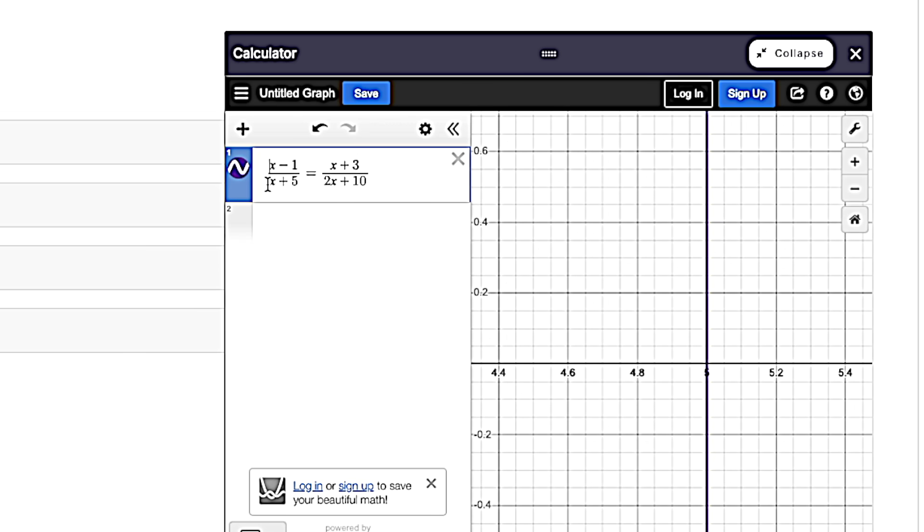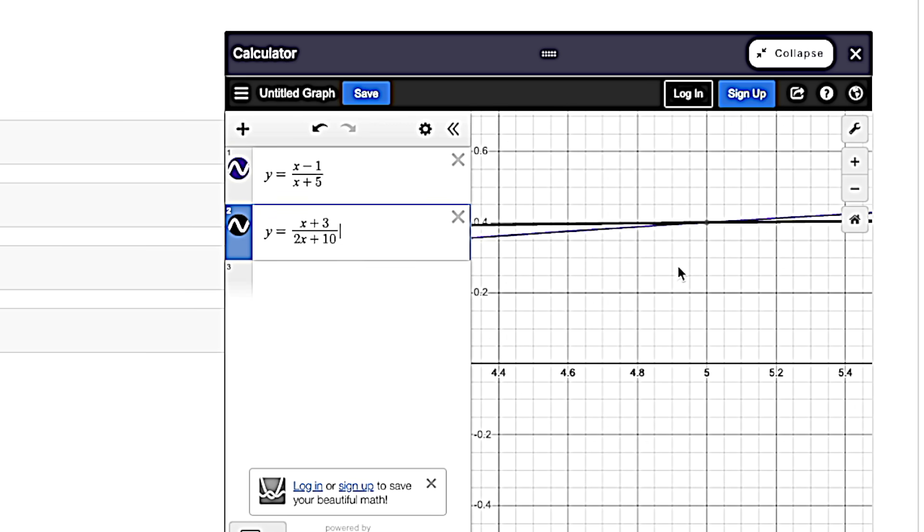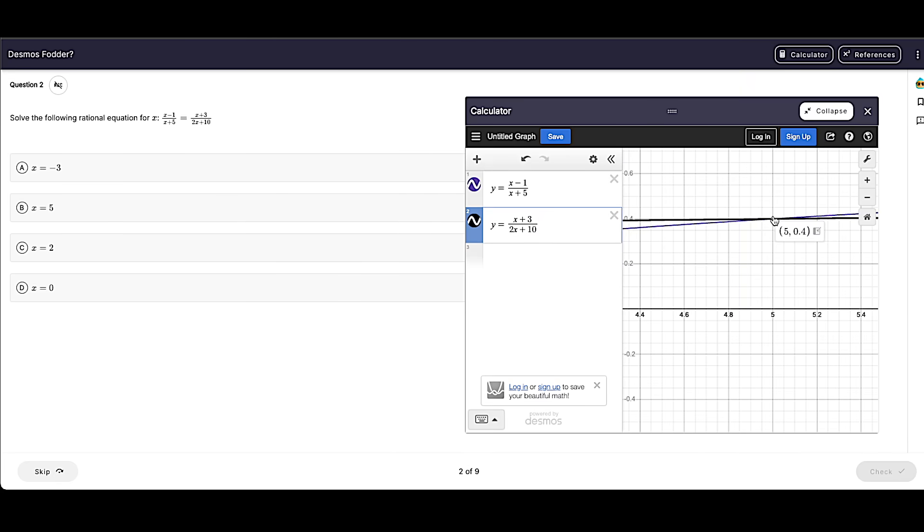Whereas if you put y equals each side of the equation, then it gives you a system of equations, and you can just find the point. And it's going to highlight that point for you, which is a lot easier. Just make sure that you ignore y since you're solving for x. And again, we get five.